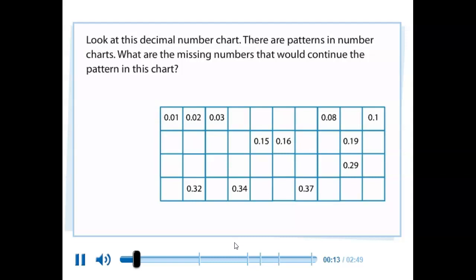Look at this decimal number chart. There are patterns in number charts. What are the missing numbers that would continue the pattern in this chart?